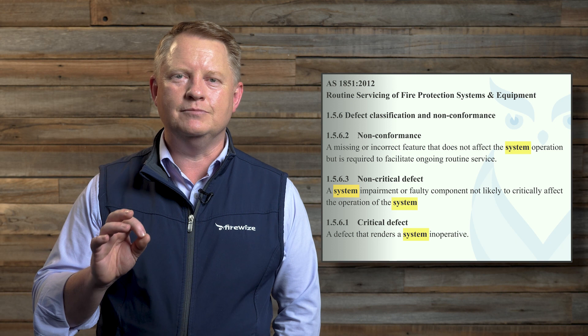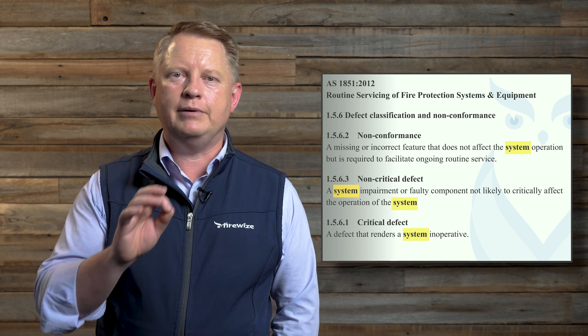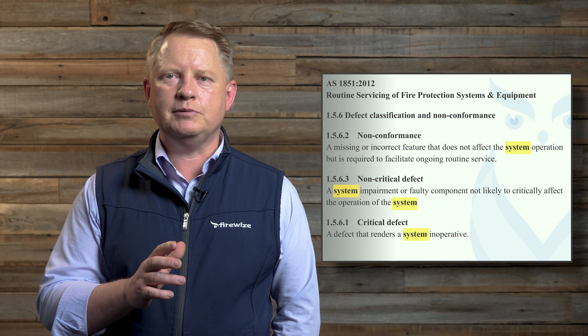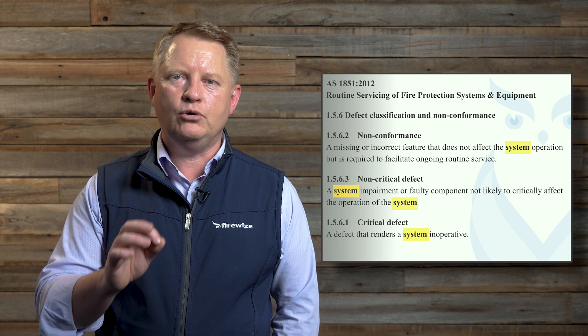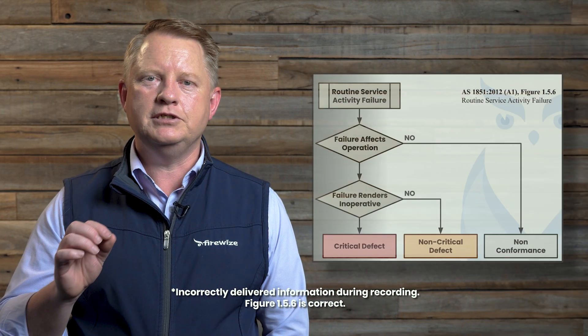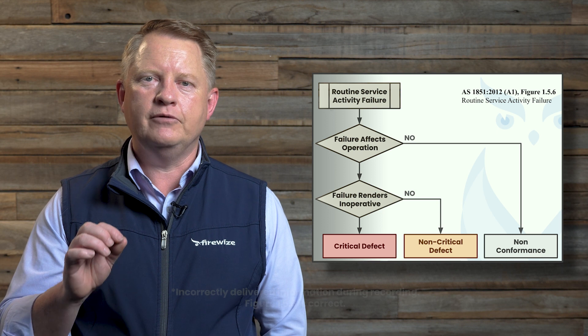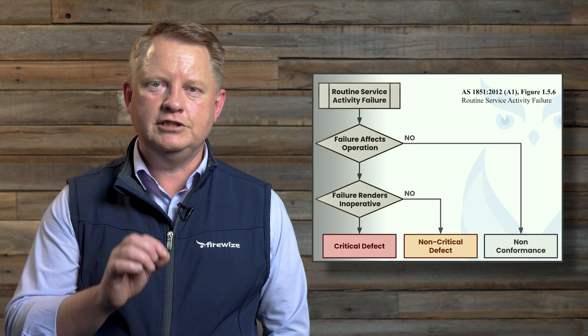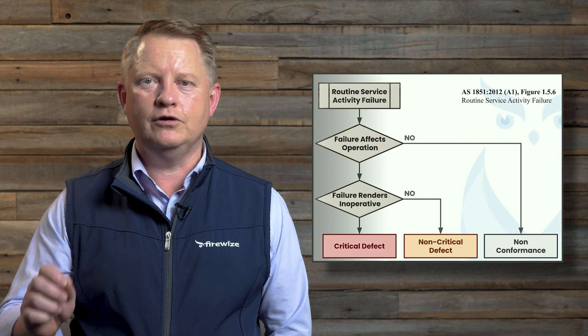I should point out that the key phrase in each of these definitions is the word 'system' as compared to item, part, or component. It might sound like splitting hairs but this is an important differentiation when classifying defects. Figure 1.2.6 was inserted into the standard to provide a framework to help people classify defects using a simple flowchart.